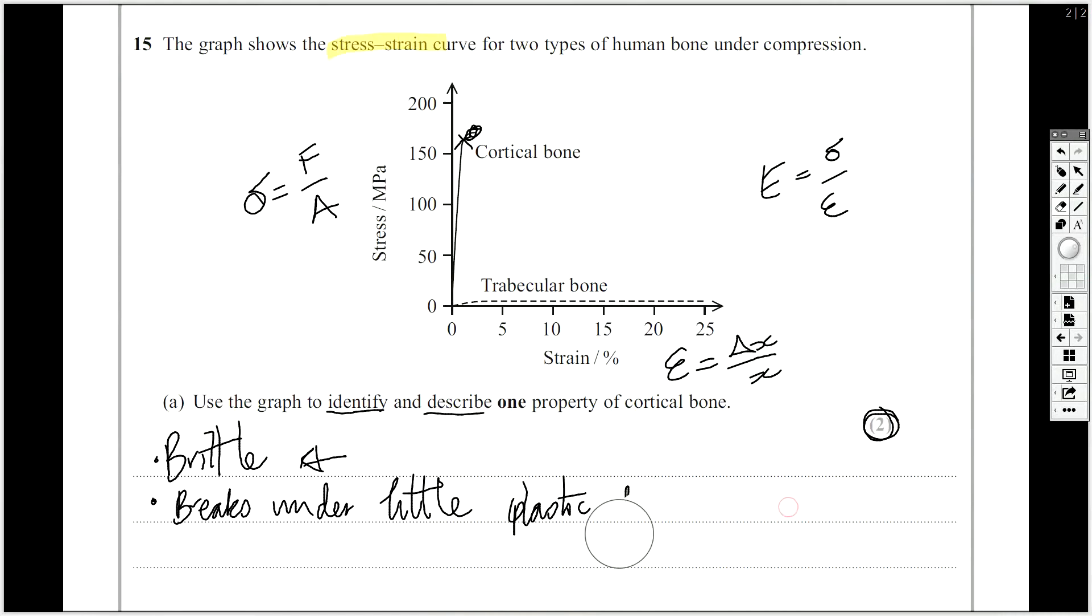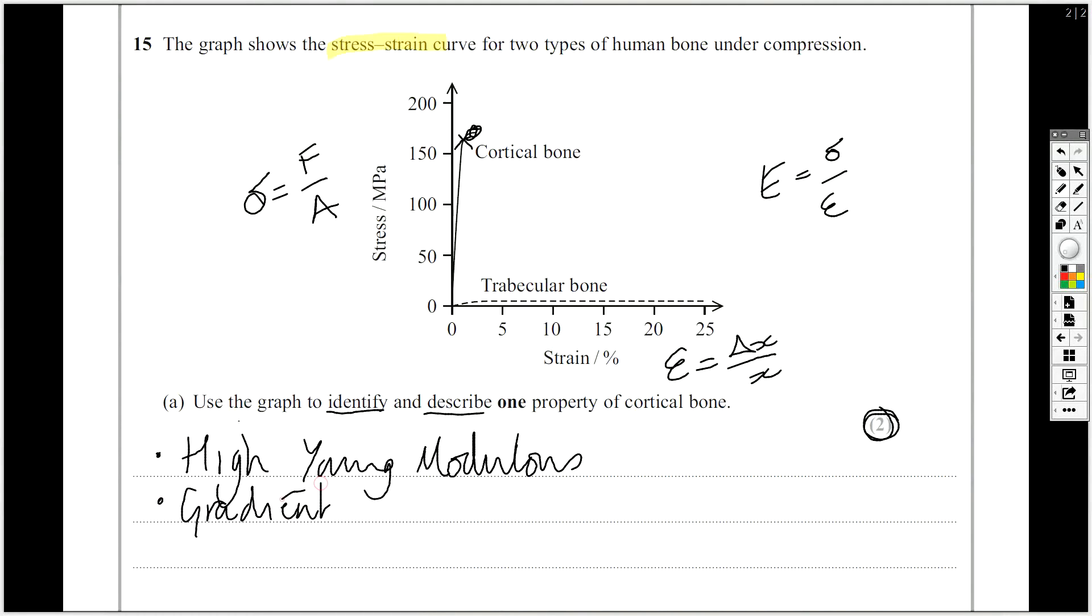You can think about this slightly differently, because you could answer this just straight away. In terms of your Young Modulus, it has a high Young Modulus. It has a high Young Modulus because the gradient of the stress-strain graph is high. And that will get you both marks as well.